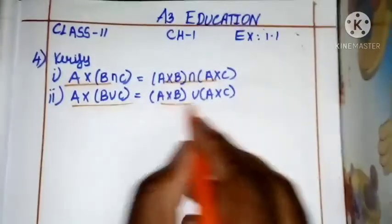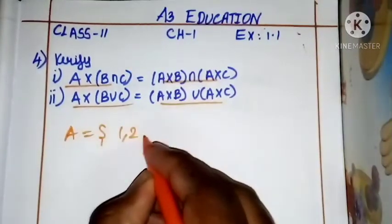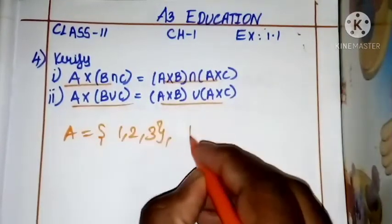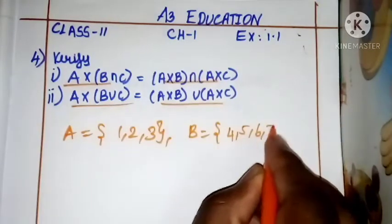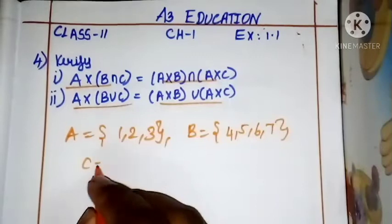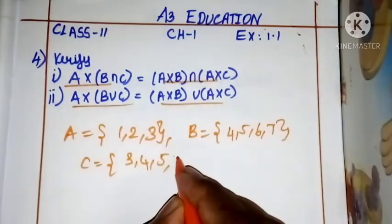Suitable ABC. This is ABC, we will show you A is equal to 1, 2, 3, B is equal to 4, 5, 6, 7, C is equal to 3, 4, 5, 9.